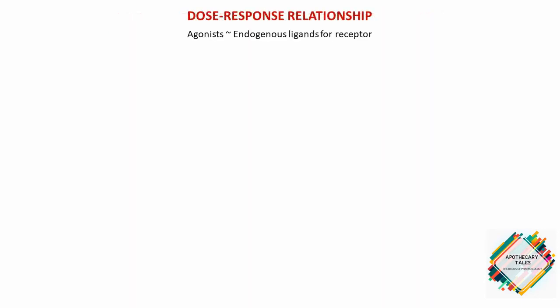Agonists are usually the drugs that mimic the action of the original endogenous ligand for the receptor. For instance, phenylephrine acts on the alpha-1 receptors. The magnitude of the drug effect produced usually depends on the drug concentration at the receptor site.